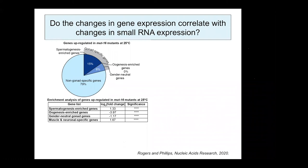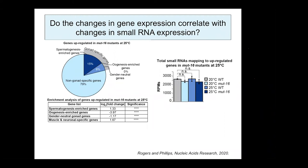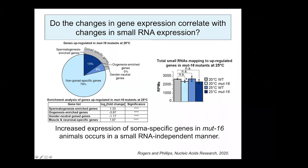Interestingly, the majority of these upregulated genes are not known targets of any small RNA pathway. To determine whether changes in expression could be explained by changes in small RNA populations, we generated and bioinformatically compared small RNA libraries from the same RNA samples used for mRNA-seq. There was no significant change in total small RNA levels mapping to these upregulated genes in heat-stressed MUT-16 mutants, indicating that the change in transcript level is not directly regulated by changes in small RNAs at elevated temperature.